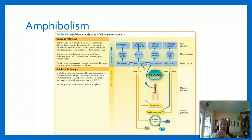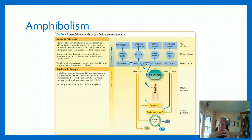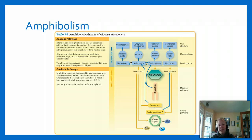Amphibolism is the term used to describe all the pathways of metabolism in the cell - it's a combination of anabolic and catabolic pathways. As you can see from this picture, the cell has the ability to stop processes and redirect molecules where they're needed. If a carbohydrate starts going through catabolic processes and the cell decides it needs it to build something else, it can redirect that molecule. The cell is frugal - it doesn't like to waste reactants or energy.